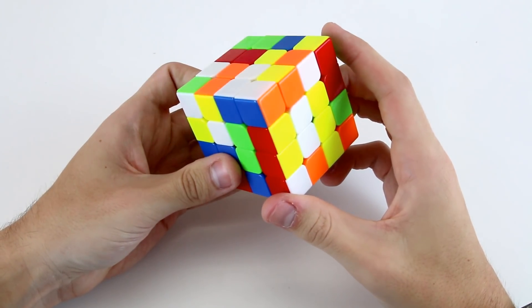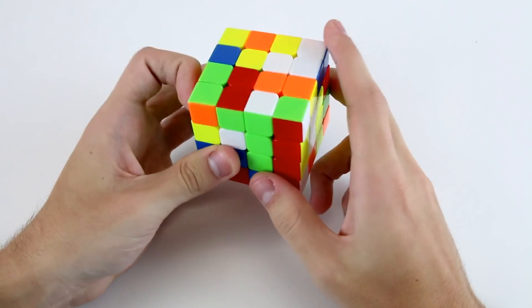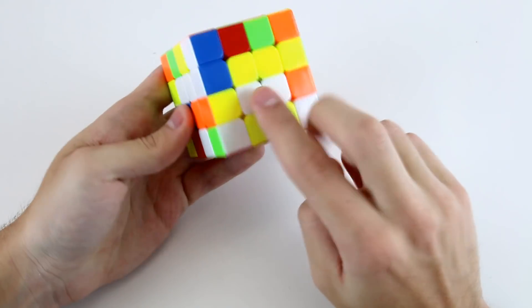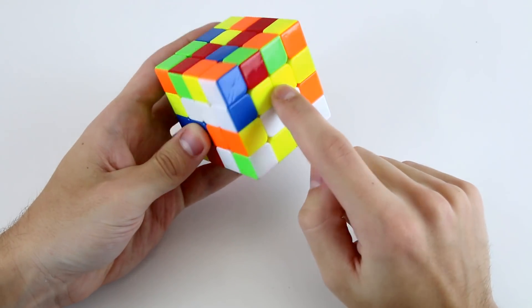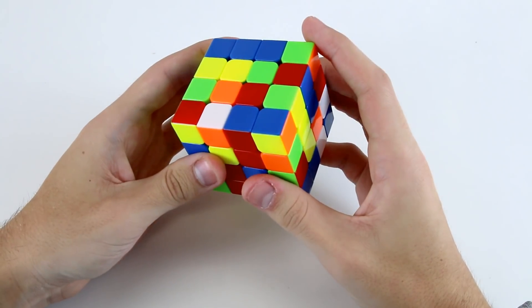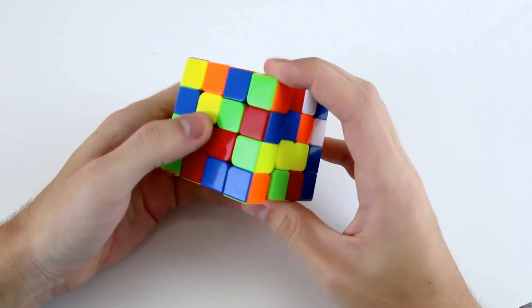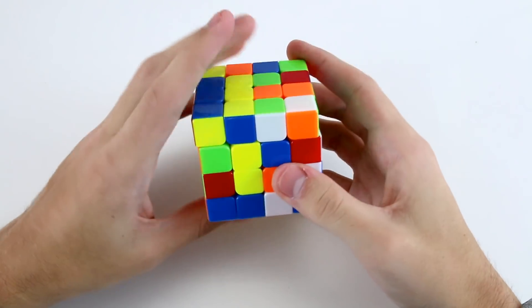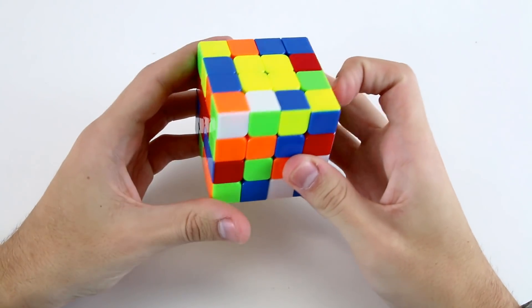If I do a wide u prime like that and then do u prime wide r prime to attach those two that keeps this block connected and then when I do a u prime I can kind of do it and rotate at the same time. Now I've got these two which I can solve like that and then insert those two like so.